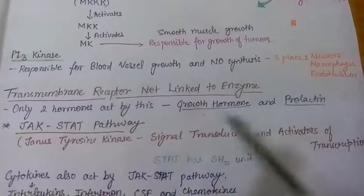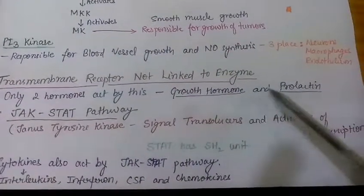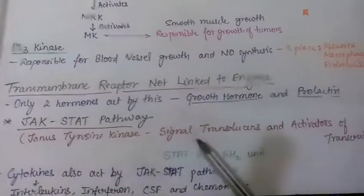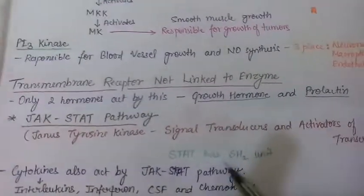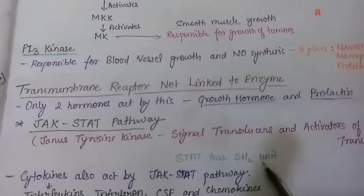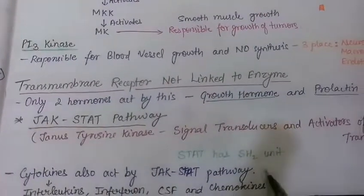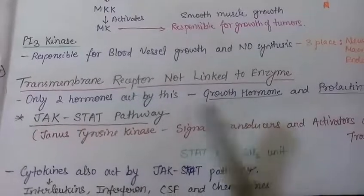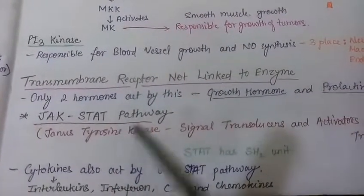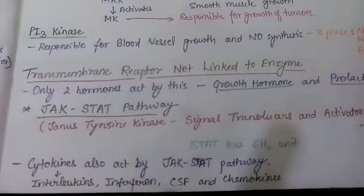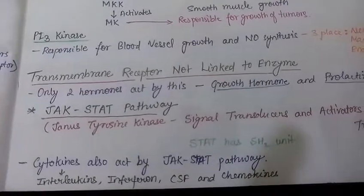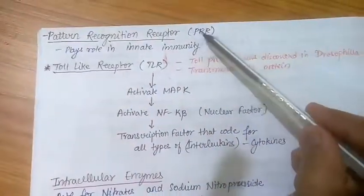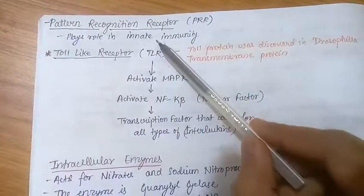The next classification is transmembrane receptors not linked to an enzyme. Only two hormones act via this type: growth hormone and prolactin. The pathway they follow is the JAK-STAT pathway — Janus tyrosine kinase and Signal Transducer and Activator of Transcription. STAT also has an SH2 domain. Cytokines also act via the JAK-STAT pathway. Cytokines are classified into four categories: interleukins, interferons, CSF (colony stimulating factor), and chemokines.